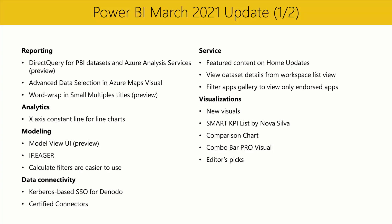The Dataset Details page includes information about the dataset like the last refresh time, a list of reports built on top of the dataset, usage metrics for the last 30 days, the ability to view lineage, create a report, or analyze in Excel, and the ability to create a new report from a template. Please note that this feature is only available in the new workspaces, not classic. And lastly, you can now filter the apps gallery to view only certified and promoted apps — apps that were set by their owners as trusted.